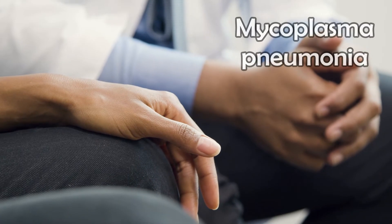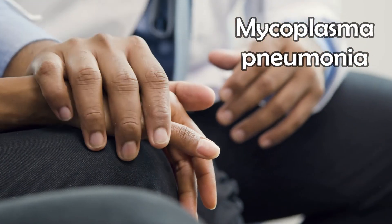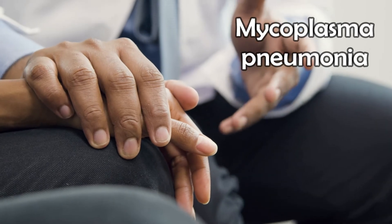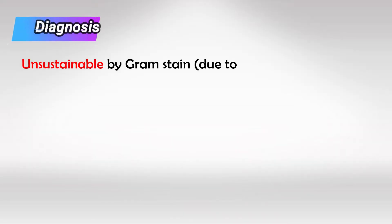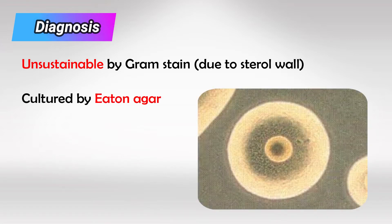Welcome back. In this video we'll talk about Mycoplasma Pneumonia. This bacteria has a sterol in the cell wall which makes it unstainable by Gram stain, but we can culture it by using Eaton agar.